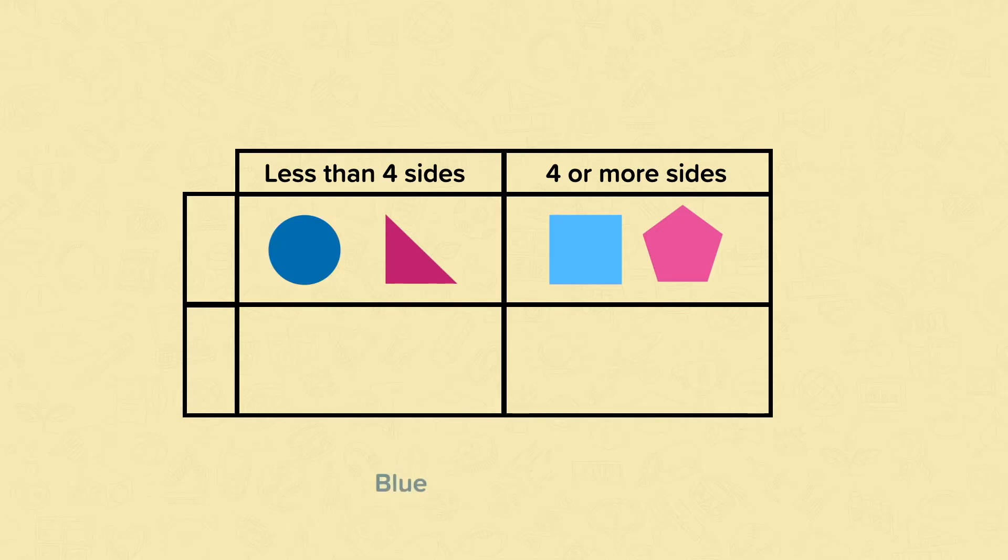Some of the shapes are blue and some of them are pink, so we can create a row for the blue shapes and a row for the pink shapes. Only the blue shapes can be in the blue row and only the pink shapes can be in the pink row, so we need to move some of the shapes.